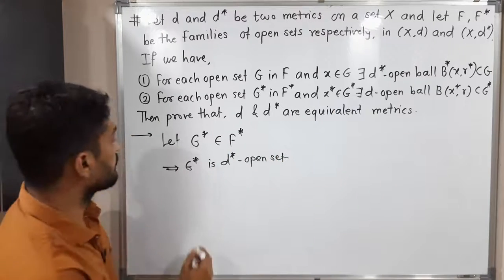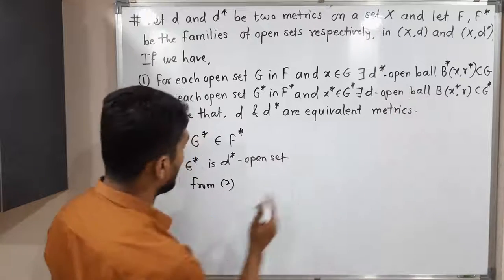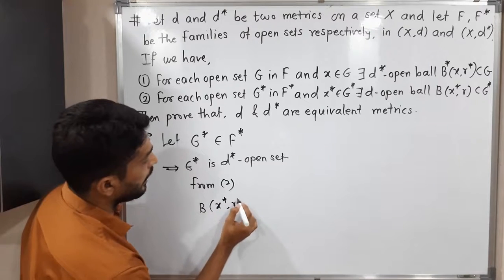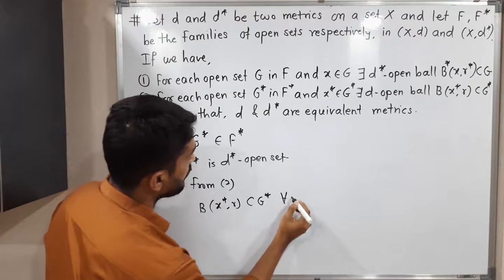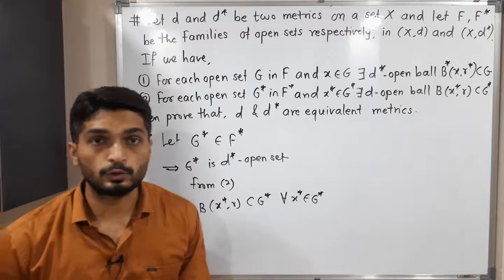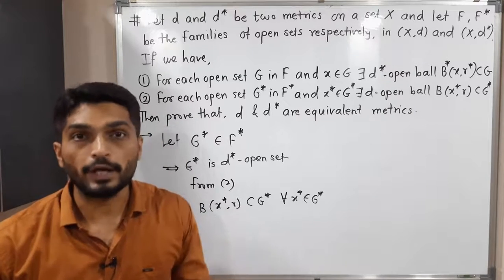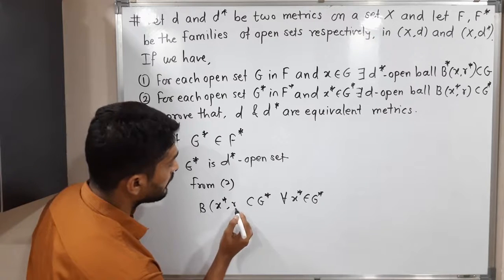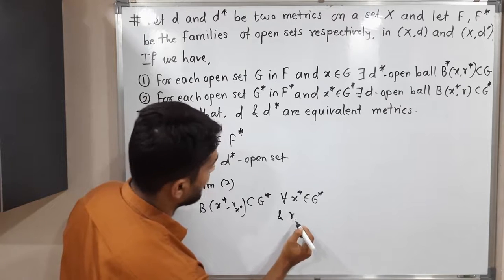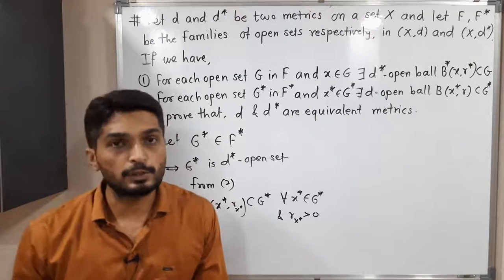Let us use the second information. From condition two, we get: B(x*, R_{x*}) ⊆ G*, and this is true for every x* belonging to G*, where R_{x*} > 0. The radius depends on that point, so I write R_{x*}. Using the second information, we got this result.